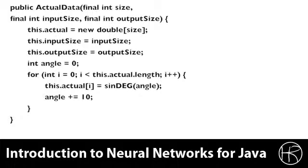Then we're going to loop over the entire length that we specified for the actual data, and we're going to calculate the sine using degrees, and we're going to calculate this at 10 degree intervals. This gives us a complete set of actual data for the size that we specified.